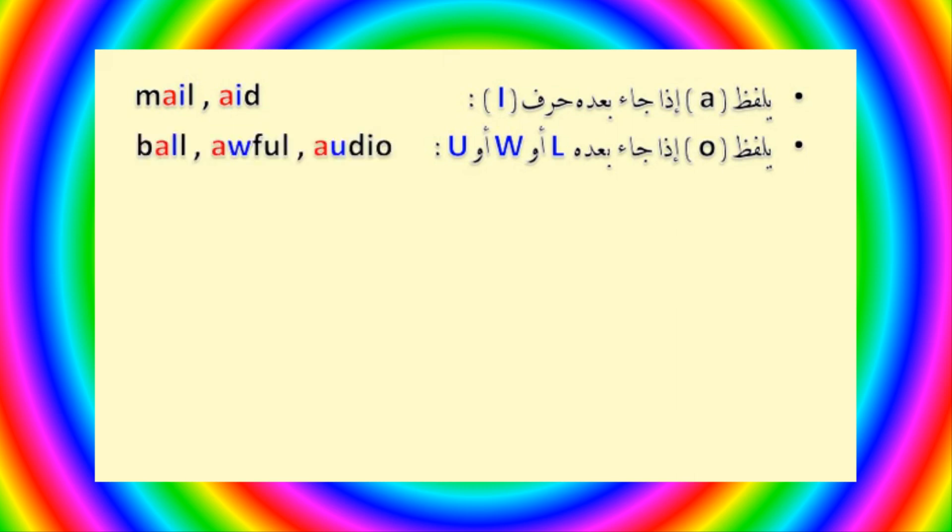يلفظ A إذا جاء بعده حرف I، مثل: male, aid. ويلفظ O إذا جاء بعده حرف L أو W أو U، ونذكر مثالاً عليه: ball, awful, audio.